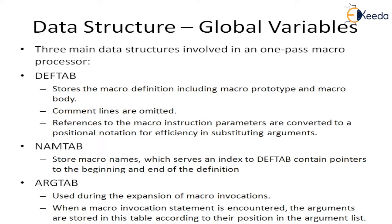The third table is the ARG table, which is useful for storing the macro invocation arguments present in a particular macro invocation statement. All arguments are stored in this table according to their positions in the argument list. This is the data structure which provides a global view.